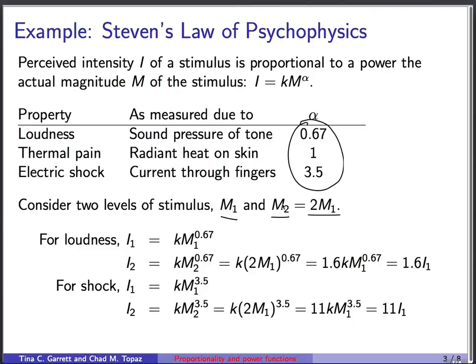So for m1, we plug into our power function. We can find the corresponding perceived intensity i1. It's km1 to the 0.67. Then we can consider that second level of stimulus, m2. So we plug m2 into our power rule. We remember that m2 here is actually 2m1. So we get this factor 2m1 to the 0.67 with a k in front of it. And when we expand all that, we get 1.6km1 to the 0.67. And we recognize that this part of this expression is the same as our original expression m1.